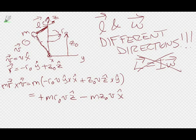Doing r cross v with m factored out: we have (−r_0 ŷ + z_0 ẑ) cross v x̂, giving m r_0 v ẑ — because ŷ cross x̂ is −ẑ, contributing +m r_0 v ẑ — plus m z_0 v (ẑ cross x̂), which is −m z_0 v x̂. So the angular momentum direction has both a z component and a minus x component — L and omega are in different directions.